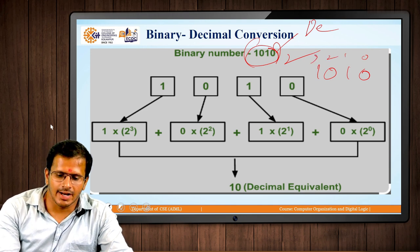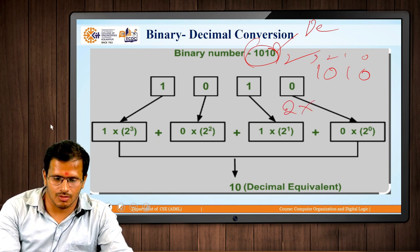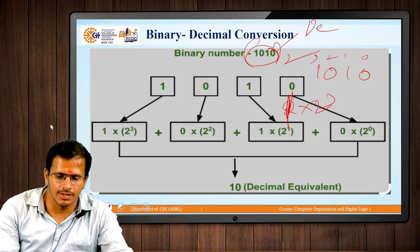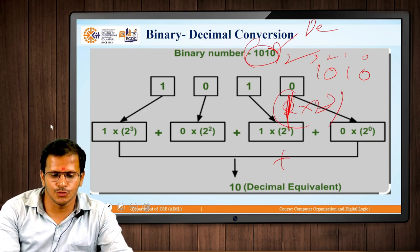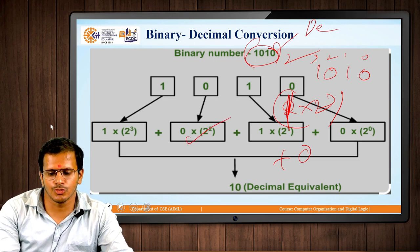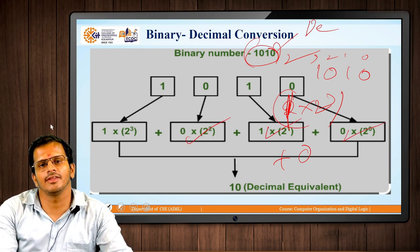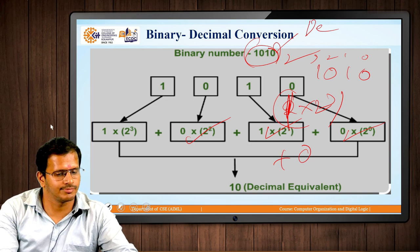Since the radix is 2, the calculation is: 1 × 2³ + 0 × 2² + 1 × 2¹ + 0 × 2⁰. And from this we will get the decimal value equivalent.